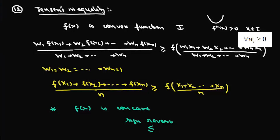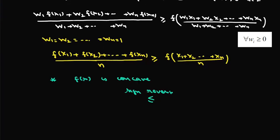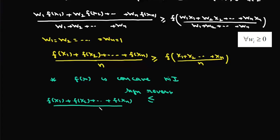When f(x) is concave in interval I, taking all weights as one, we write: [f(x1) + f(x2) + ... + f(xn)] / n ≤ f([x1 + x2 + ... + xn] / n). This is Jensen's Inequality for the concave case.